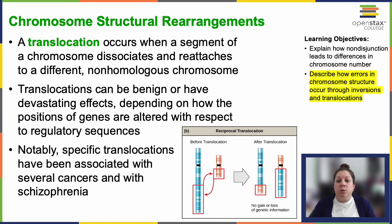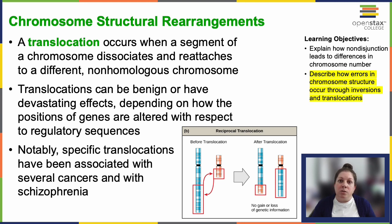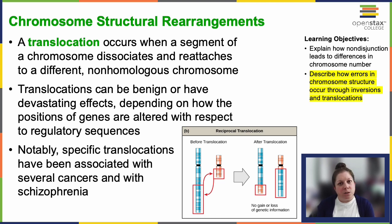Translocation occurs when a chromosome segment breaks and attaches to a different non-homologous chromosome — it reattaches to the wrong thing. Translocations can have a range of effects, from benign (you don't even know you have it) to very severe, depending on gene position, where the segment lands, and whether regulatory sequences associated with the gene were lost in the process. Some specific translocations have been linked to cancer and, interestingly, schizophrenia.